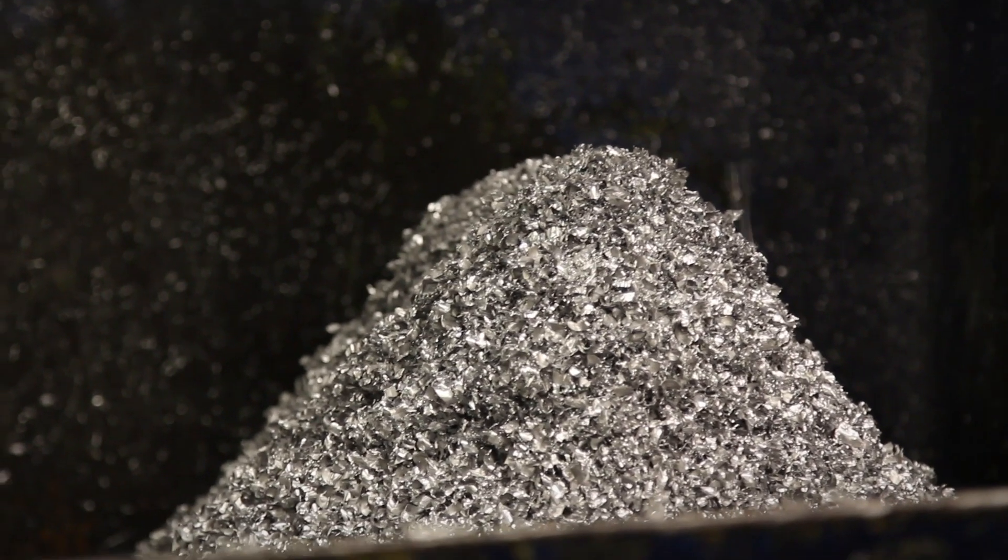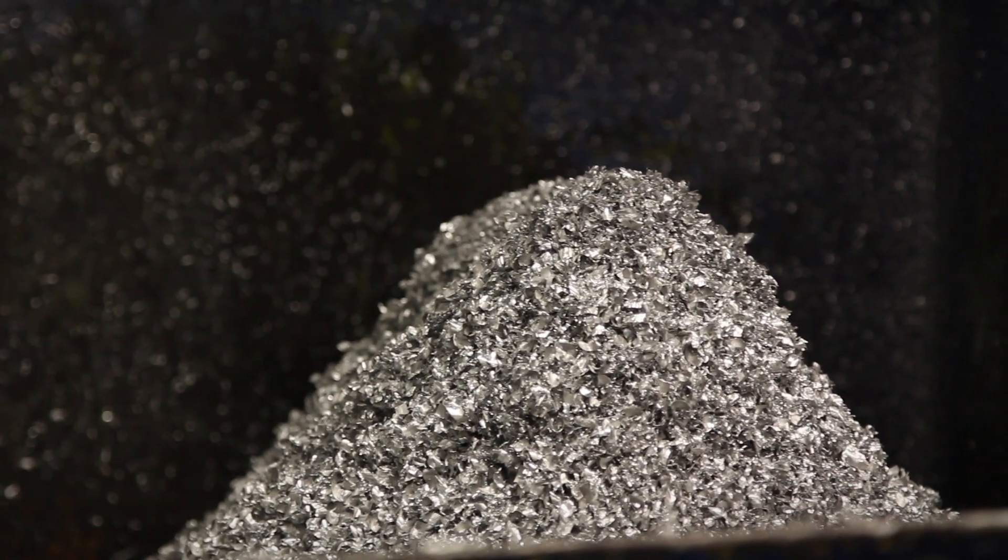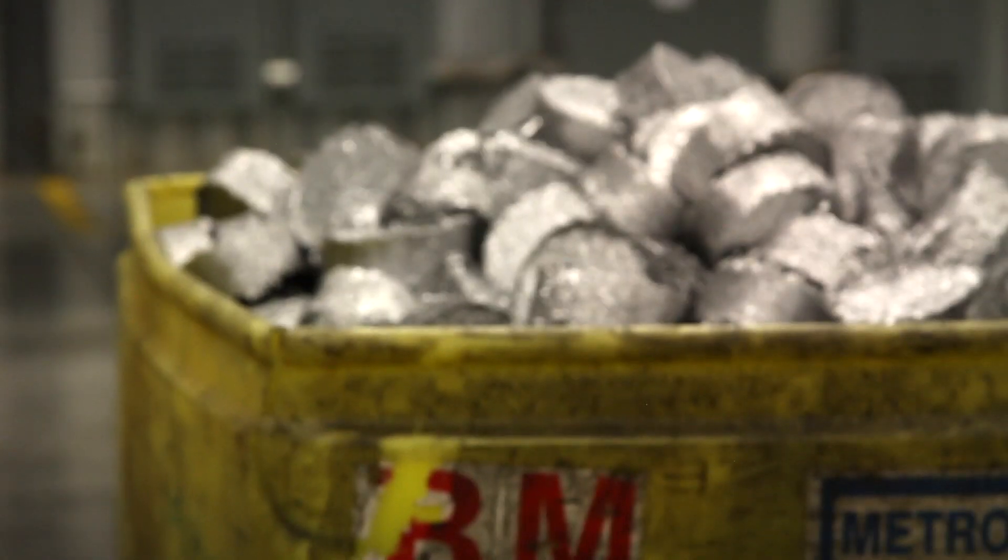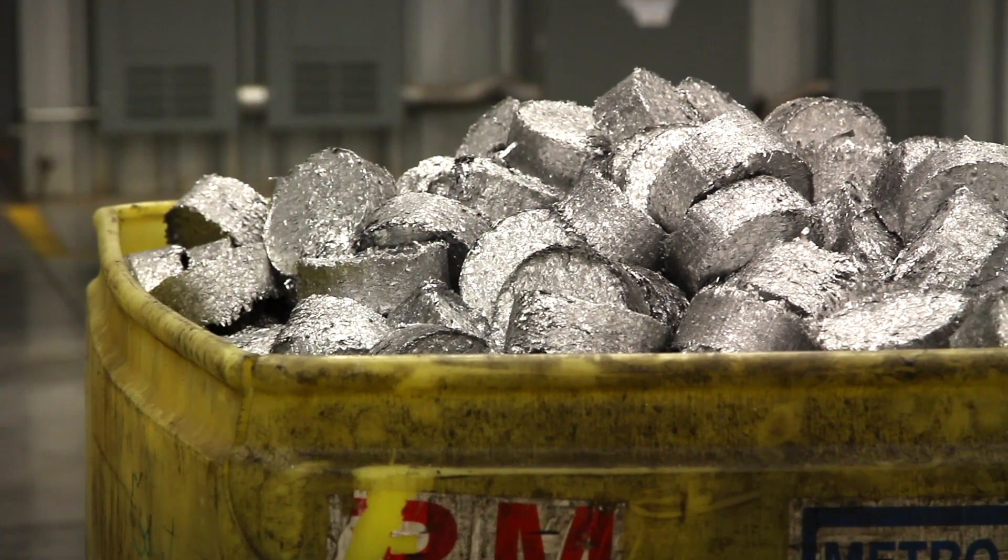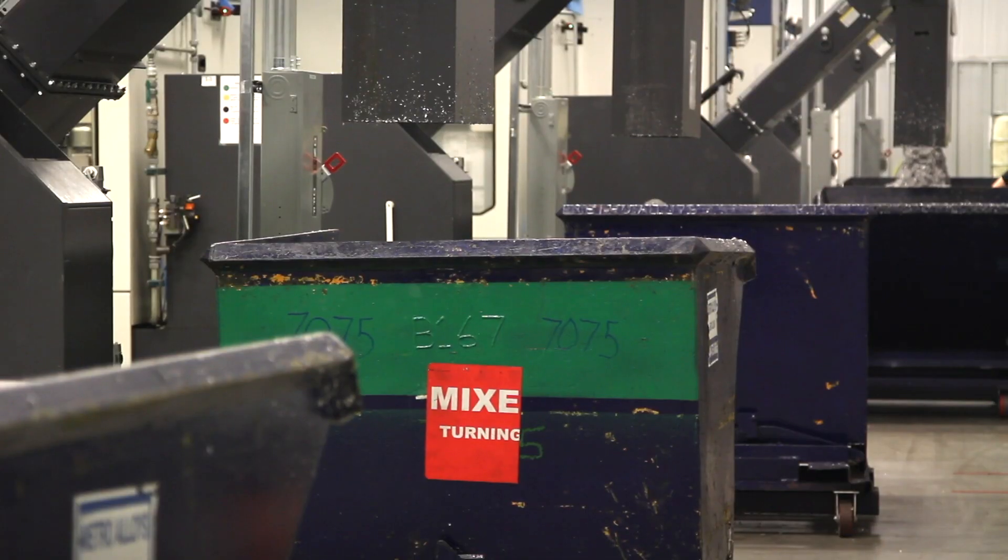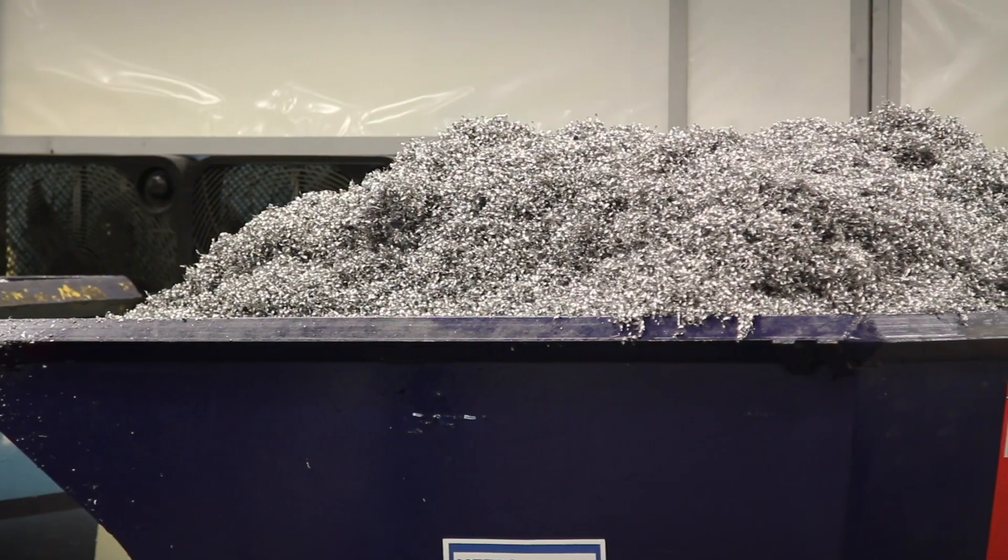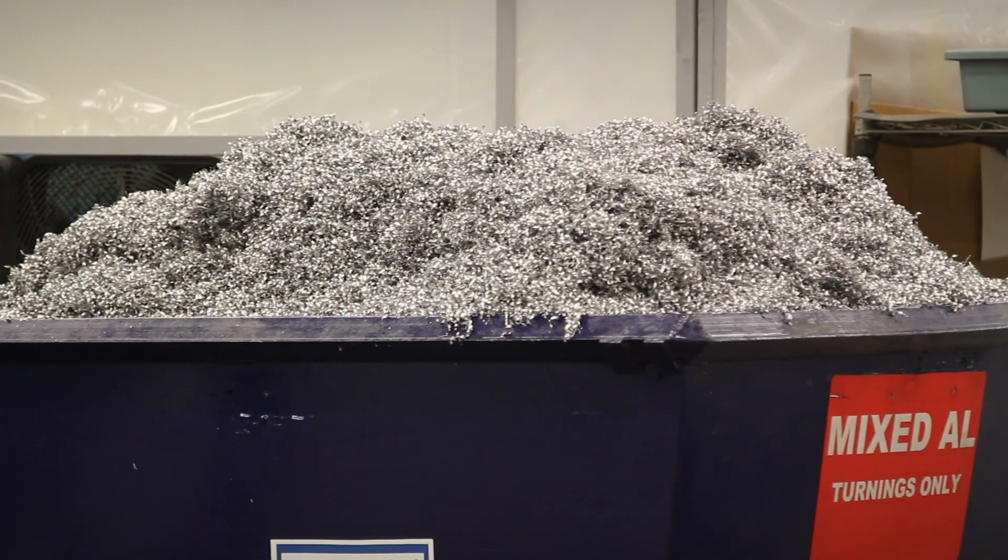After a part is finished being machined, the lubricant-soaked metal shavings are collected and compressed into metal pucks that can be recycled. This process both helps recycle metal and squeeze the lubricant from the metal. Afterwards, the lubricant is put in a centrifuge and filtered for future use.